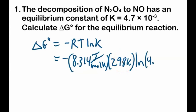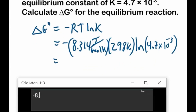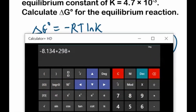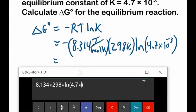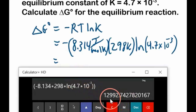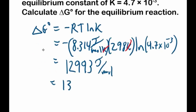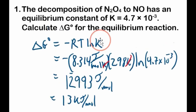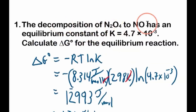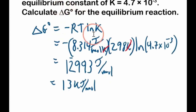So ln K = ln(4.7 × 10⁻³). Plugging in: −8.314 × 298 × ln(4.7 × 10⁻³). It is a positive number: 12,993 joules per mole. Notice it's positive. Usually we report this in kilojoules, and with two sig figs that's 13 kJ/mol. Positive means it is spontaneous to the left, so the decomposition is non-spontaneous at standard state and temperature.